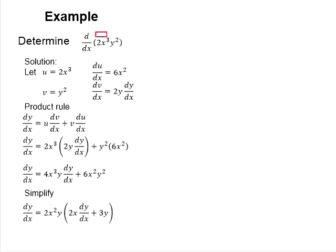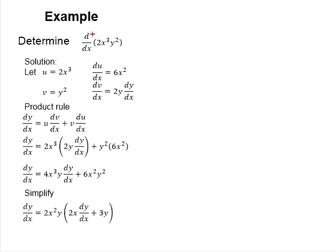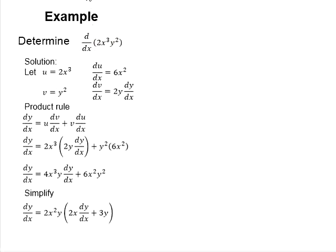You are asked to differentiate the function here, which appears in the form of a product. You have two functions here, and you know that y is a function of x as well. With that, you know this is an implicit function and the two variables appear in the form of products. With that, you are going to adopt the product rule.